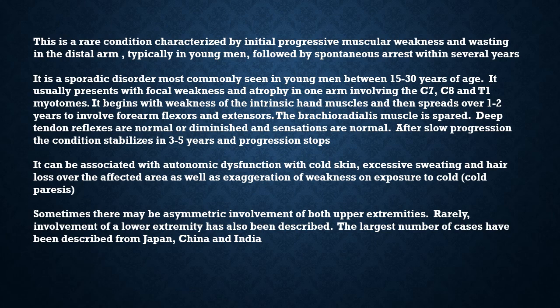It usually presents with focal weakness and atrophy in one arm involving the C7, C8, and T1 myotomes. It begins with weakness of the intrinsic hand muscles and then spreads over one to two years to involve forearm flexors and extensors. The brachioradialis muscle is spared, deep tendon reflexes are normal or diminished, and sensations are normal.